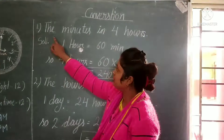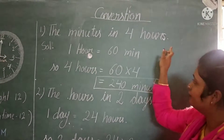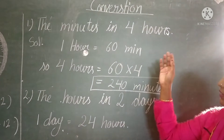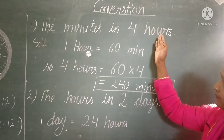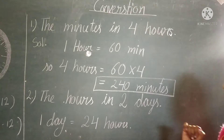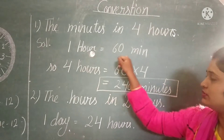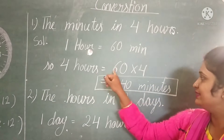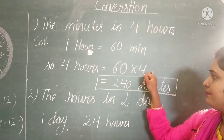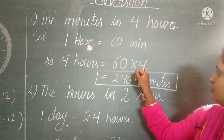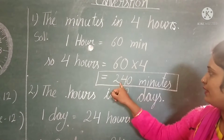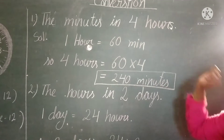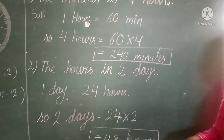Here we have a question: how many minutes in 4 hours? We already know that 1 hour equals to 60 minutes. So, 4 hours equals to 60 multiplied by 4. 4 times 60 is 240. So, 240 minutes is 4 hours.